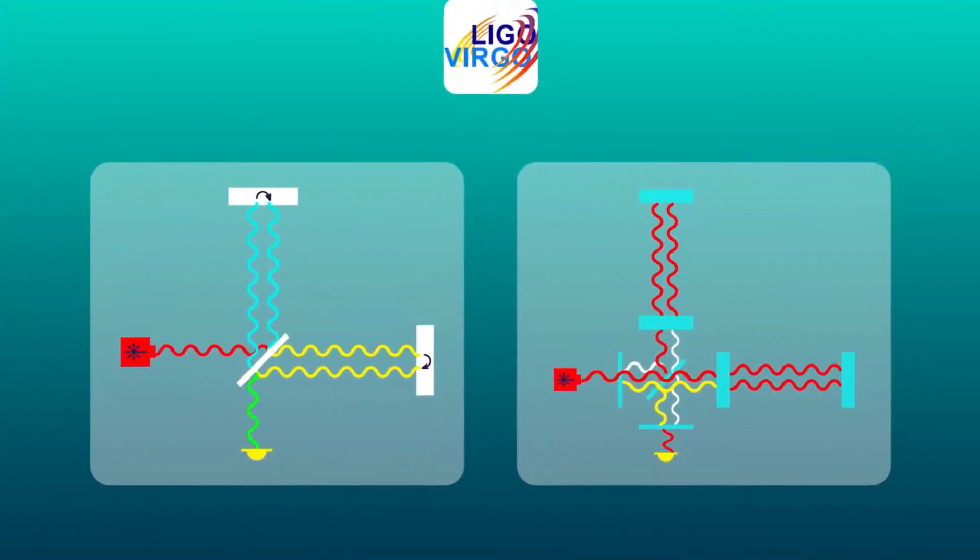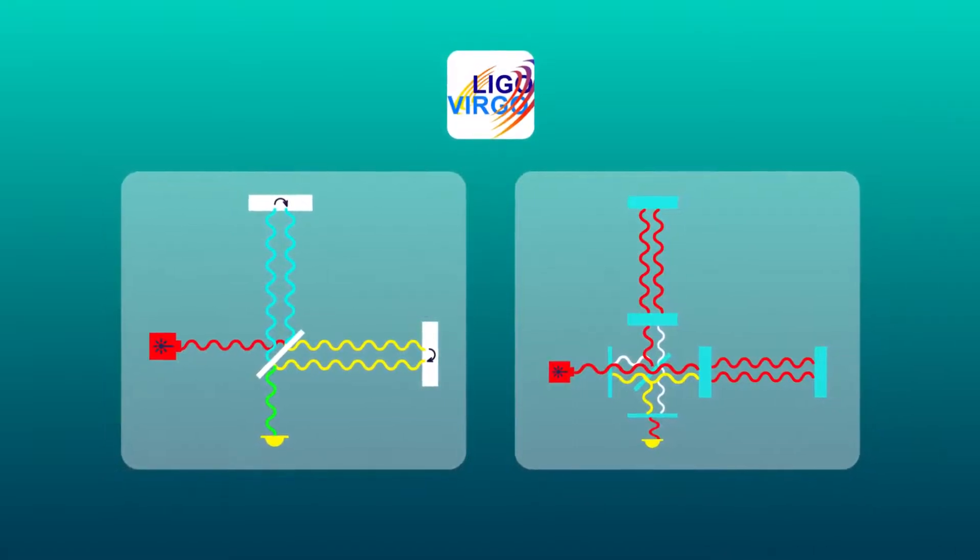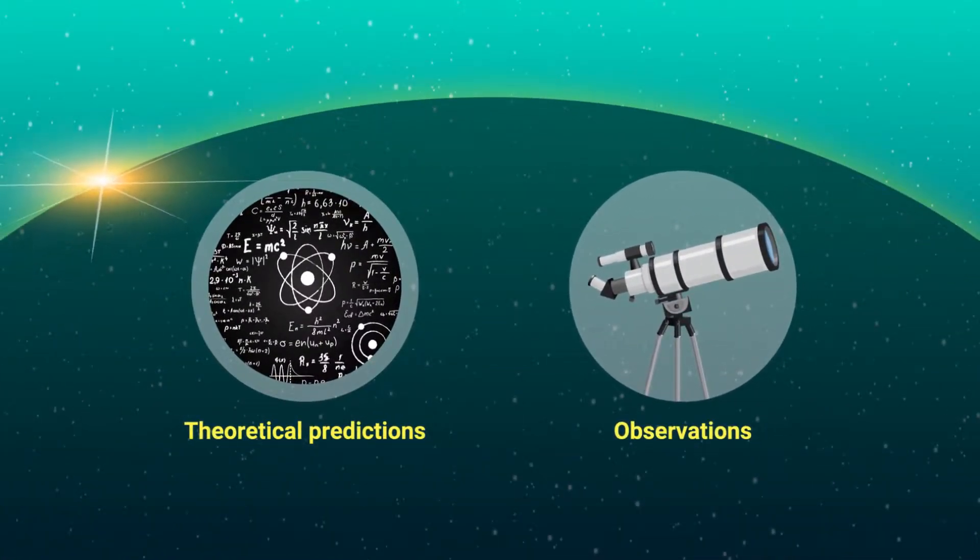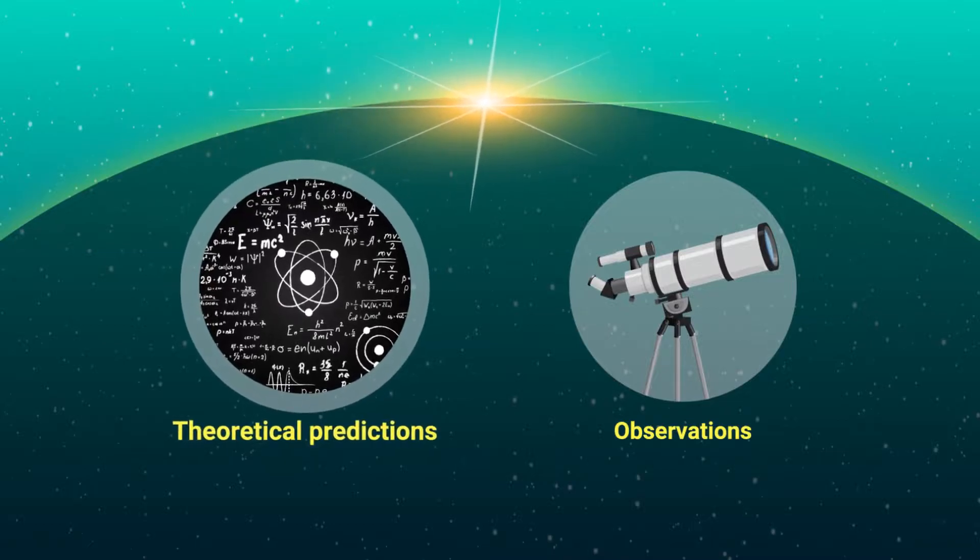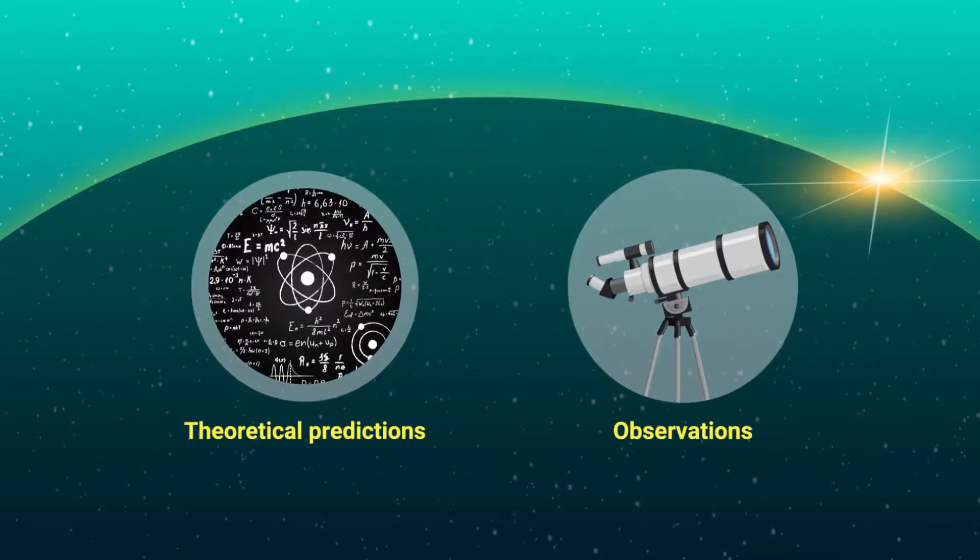The detection of these waves at LIGO-Virgo facilities marked a new dawn in gravitational wave physics and astronomy, where theoretical predictions met actual observational data.